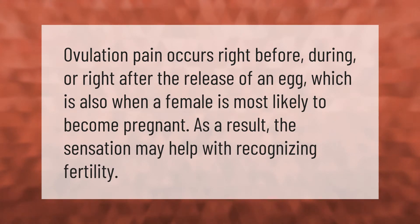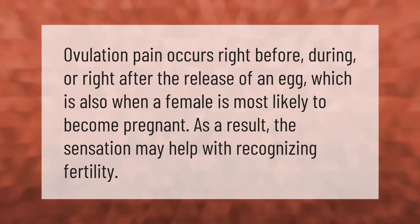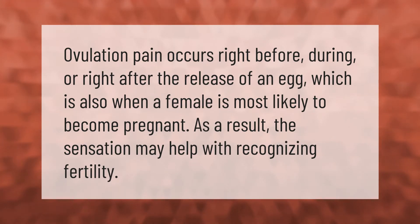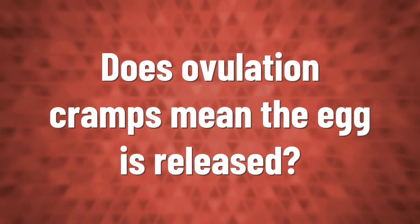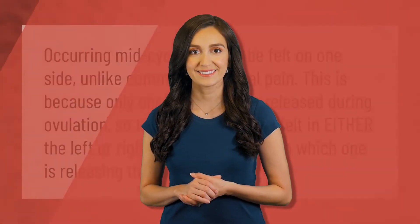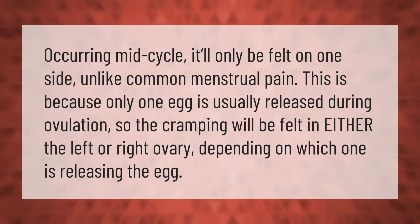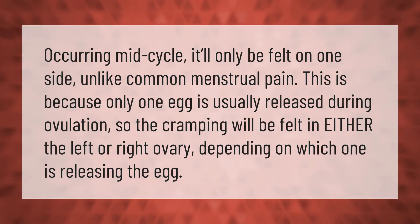Ovulation pain occurs right before, during, or right after the release of an egg, which is also when a female is most likely to become pregnant. As a result, the sensation may help with recognizing fertility. Occurring mid-cycle, it will only be felt on one side, unlike common menstrual pain. This is because only one egg is usually released during ovulation, so cramping will be felt in either the left or right ovary depending on which one is releasing the egg.